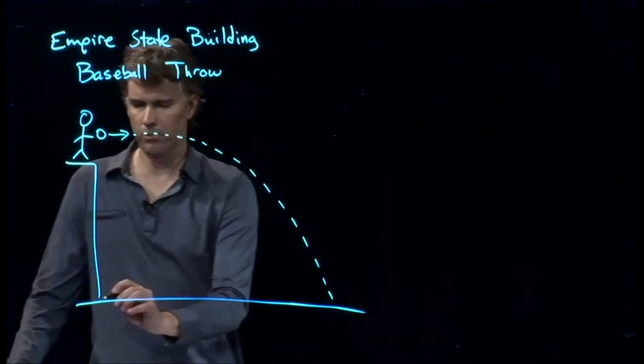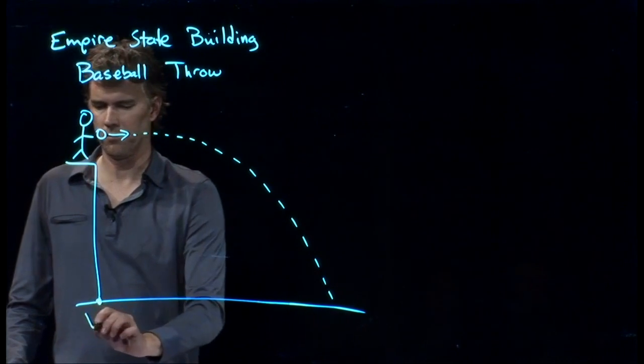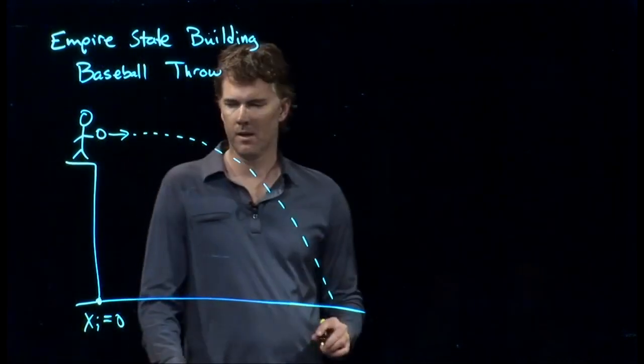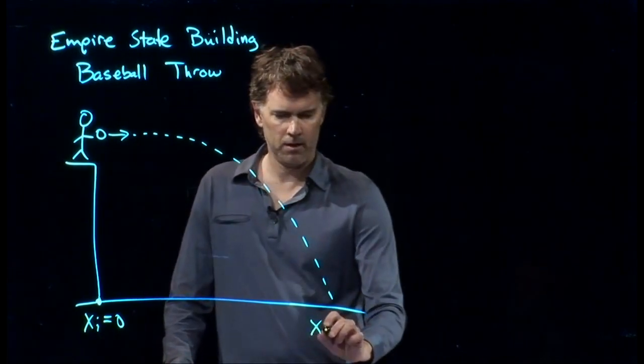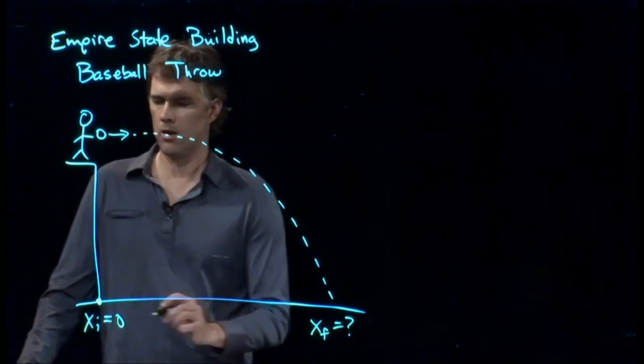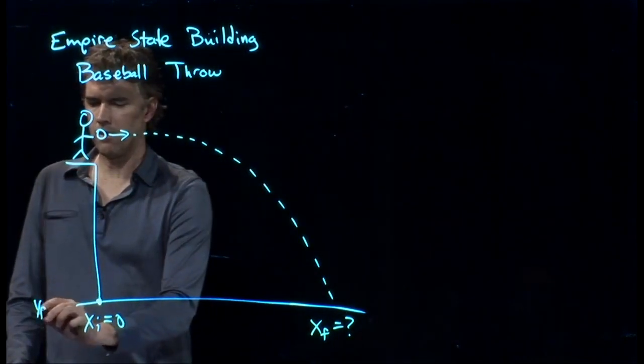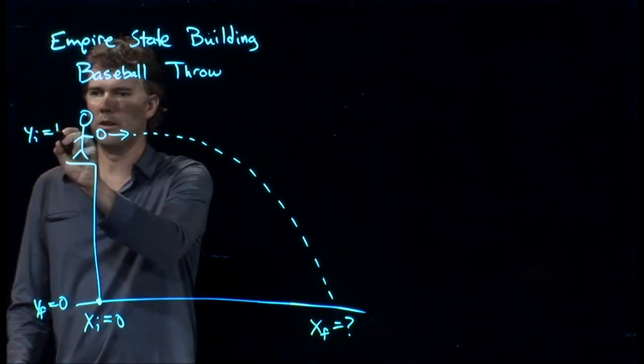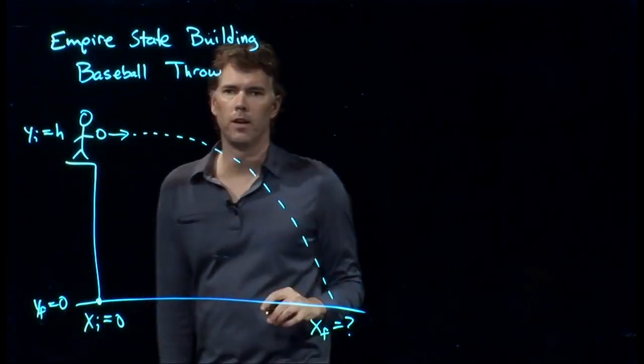Well, to answer that question, we first need to decide on a coordinate system. So let's make our origin right there at the bottom of the building. X initial is zero. X final is what we're looking for. Y final is the ground, so that's zero. Y initial is up there where we started, height H.